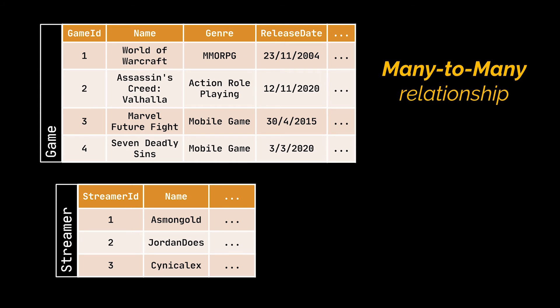These relationships can sometimes be tricky to identify and represent. Let's try to add the game ID column to the streamer table as we did previously. Notice that this approach won't solve our issue, as we potentially need to represent several games for one streamer, and what we did only allows us to represent a single game.